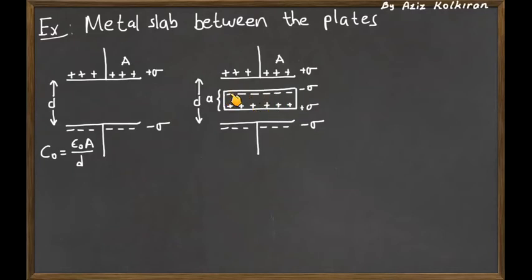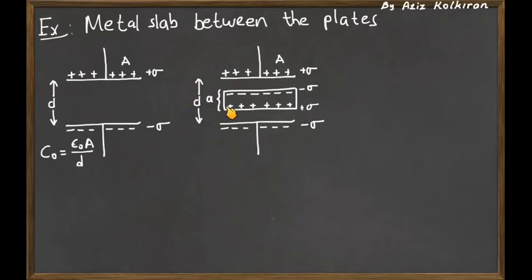So what happens to the capacitance then? The question is: if our initial capacitance is given by epsilon_0 times A divided by D, then what is the capacitance of this new configuration — the parallel plates with the slab of thickness A — in terms of D, A, and the surface area?